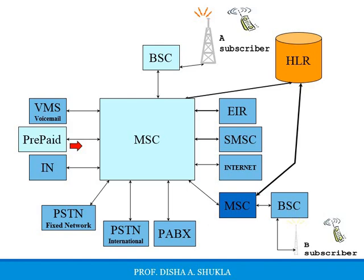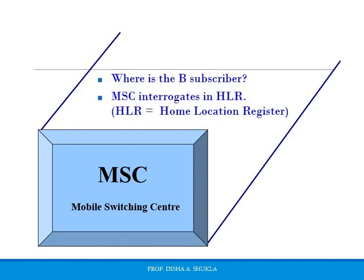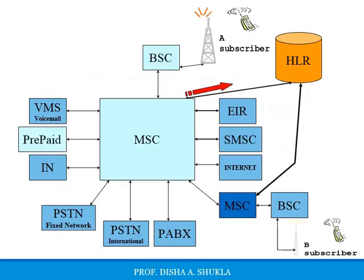From the prepaid node, the data for A is obtained and passed back to the MSC. Now the MSC checks the location of subscriber B — that is, which BSC and further which MSC subscriber B is connected to. The MSC will be interrogating the HLR, that is the home location register. The home location register has the actual position of the particular subscriber. If the subscriber is in its own cell, then its value will be stored in the home location register. The MSC will interrogate with the HLR.